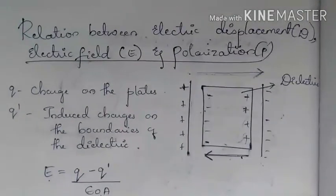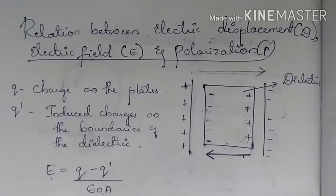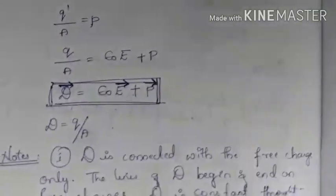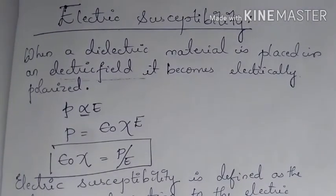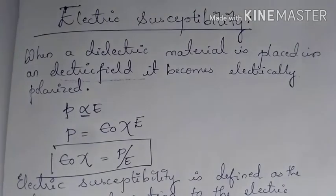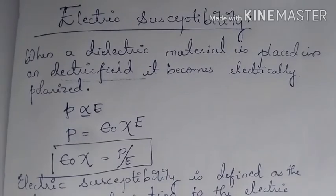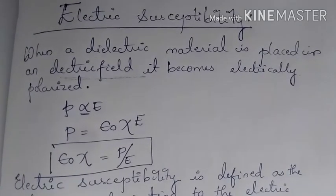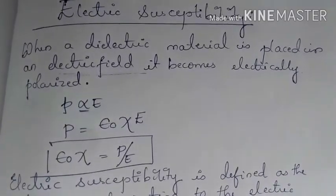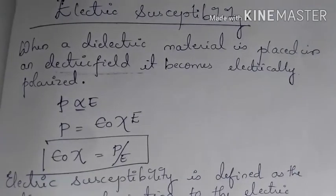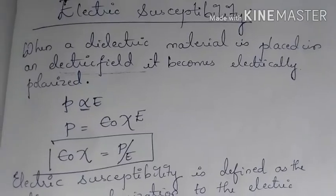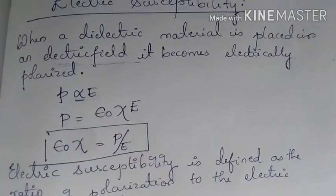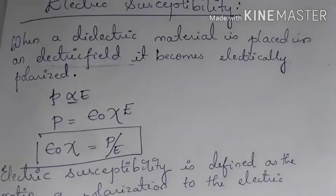To summarize, we learned the relationship between electric displacement D, electric field E, and polarization P: D equals epsilon naught E plus P. We also learned electric susceptibility, defined as the ratio of polarization to electric field strength, chi equals P over E, and atomic polarizability alpha. In the next class, we will derive the relationship between dielectric constant and electric susceptibility.